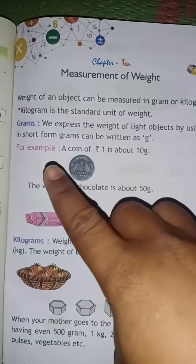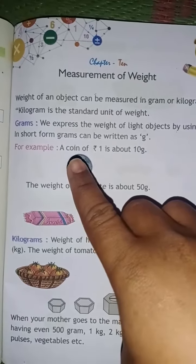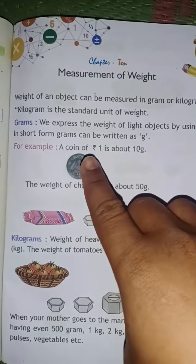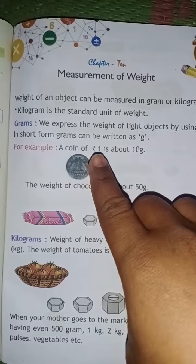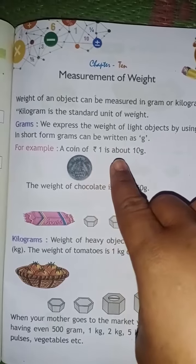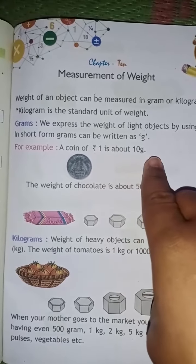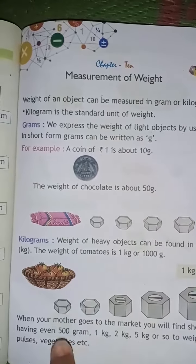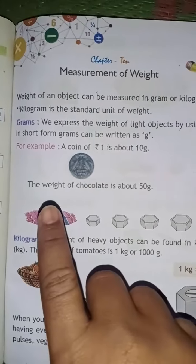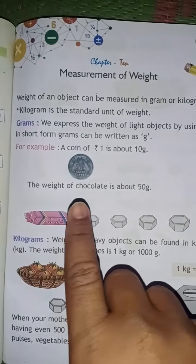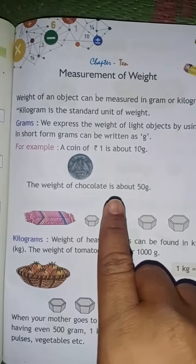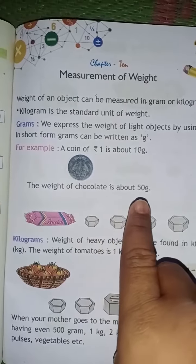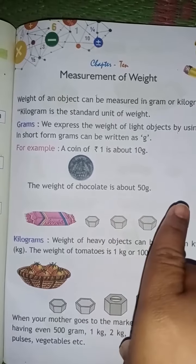For example, a coin of rupees 1 is about 10 grams. The weight of a chocolate is about 50 grams.